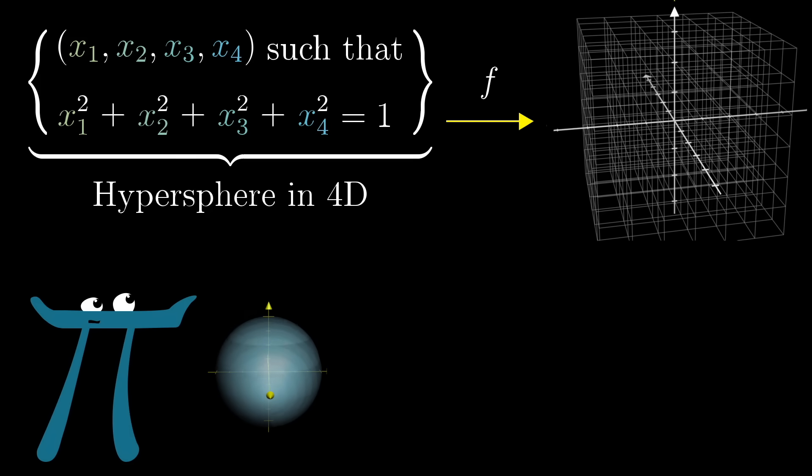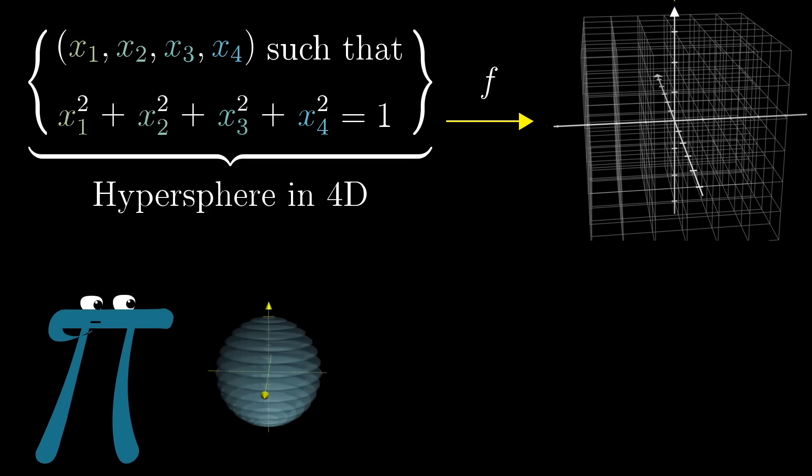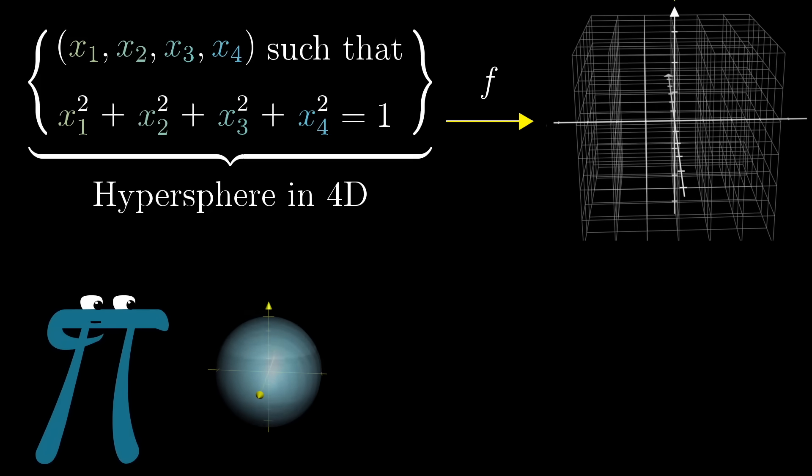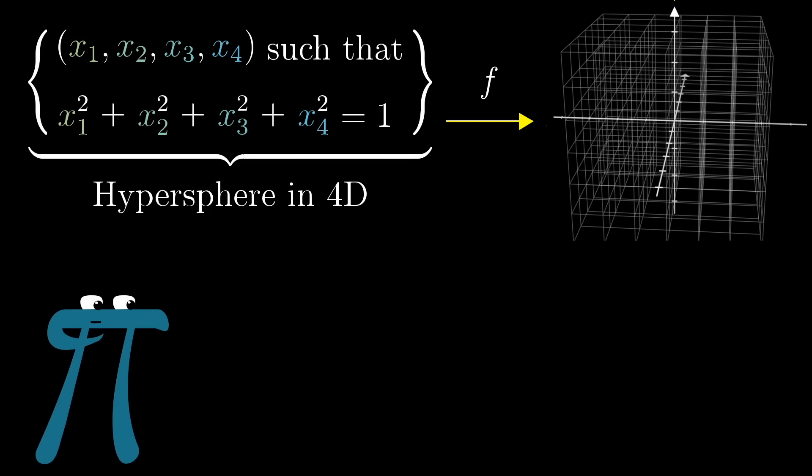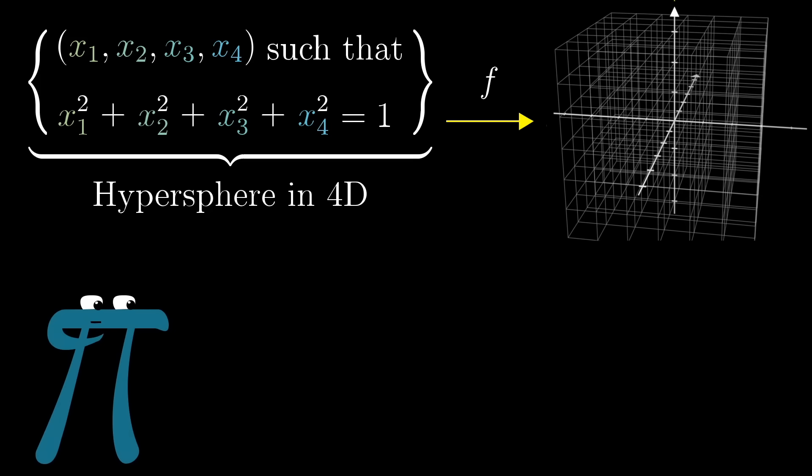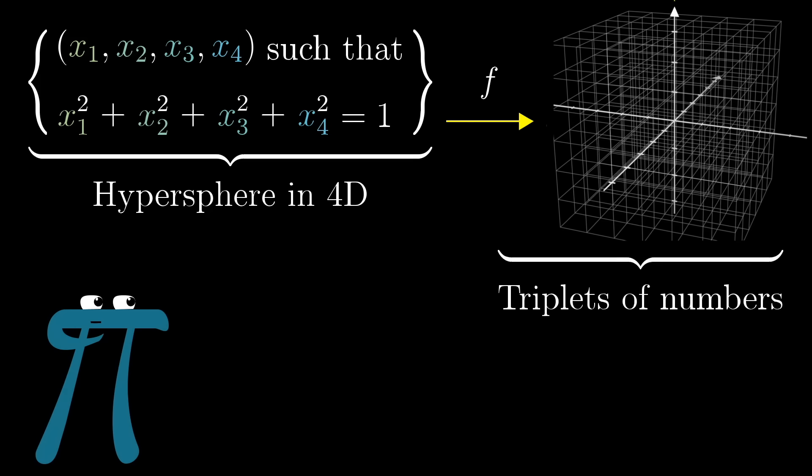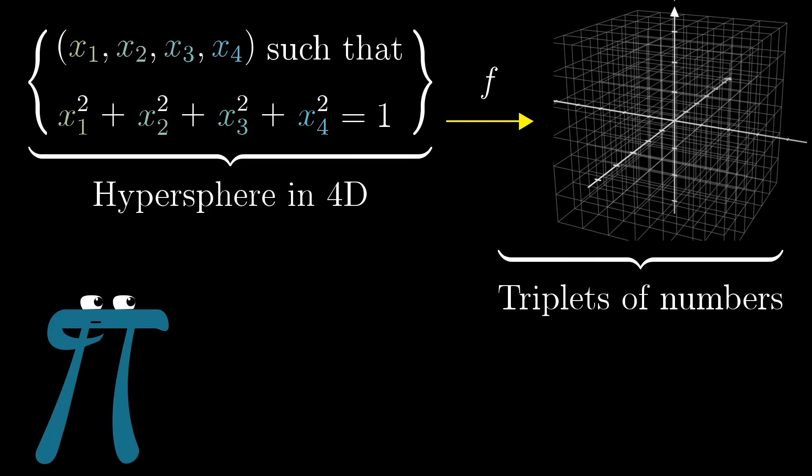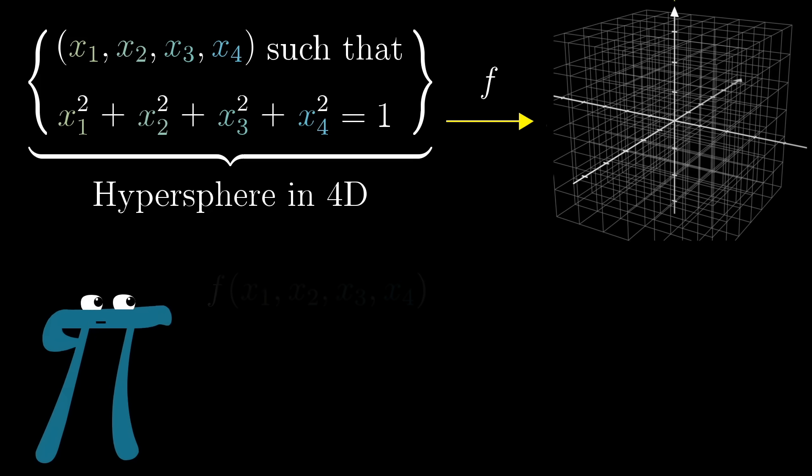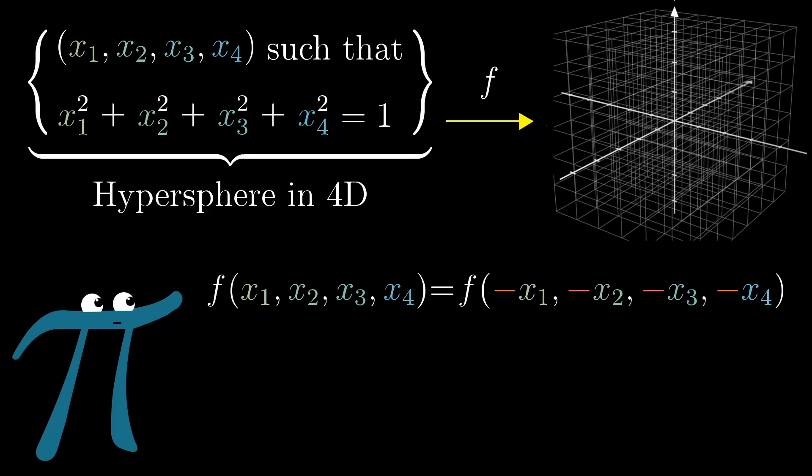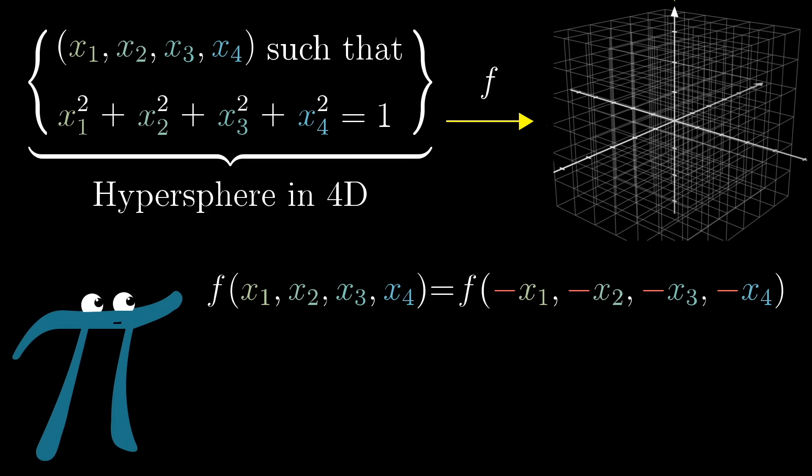Those are the points in 4D space, a distance one from the origin. Borsuk Ulam says that if you try to map that set, all those special quadruplets of numbers, into three-dimensional space, continuously associating each one with some triplet of numbers, there must be some antipodal collision. An input, x1, x2, x3, x4, where flipping all of the signs wouldn't change the output.